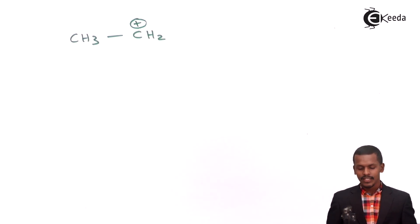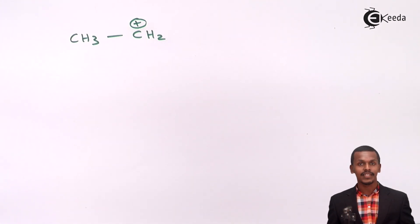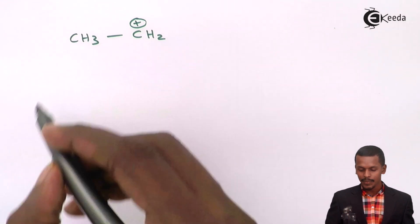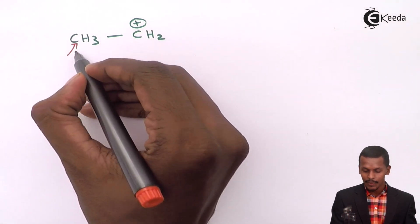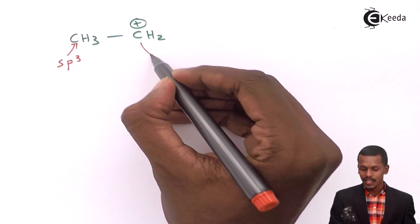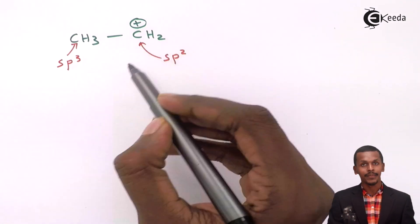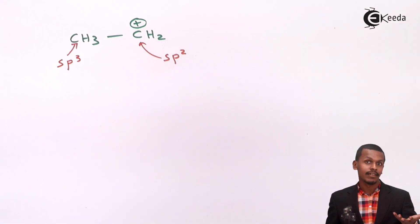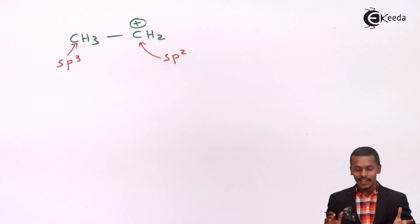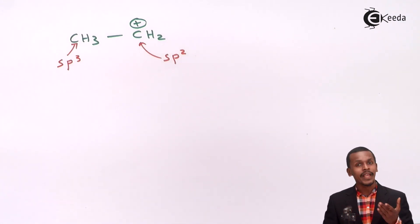As a simple example, suppose we have a species known as an ethyl cation. The carbon atoms involved in this case are of different hybridization. One carbon shows sp3 hybridization, while the other carbon atom shows sp2 hybridization. We will focus on the sp2 carbon atom, because in that carbon atom we can find the empty p orbital, which will make it easy to understand how hyperconjugation occurs.